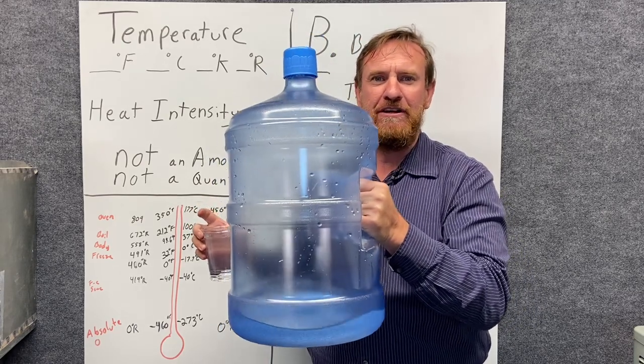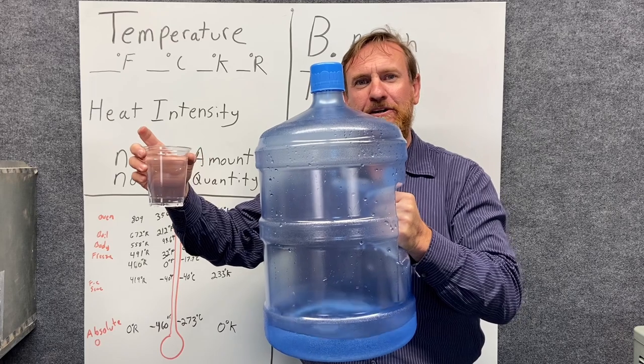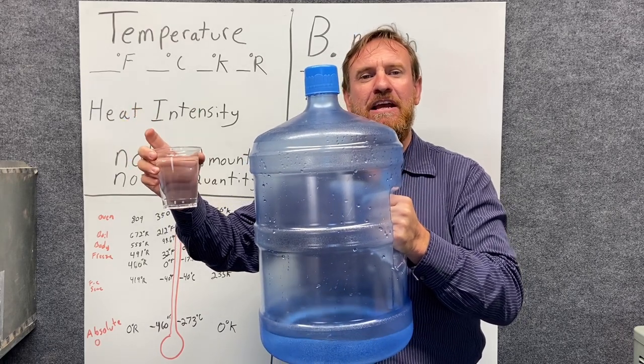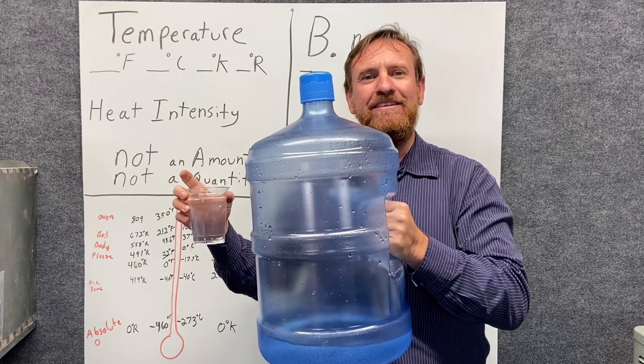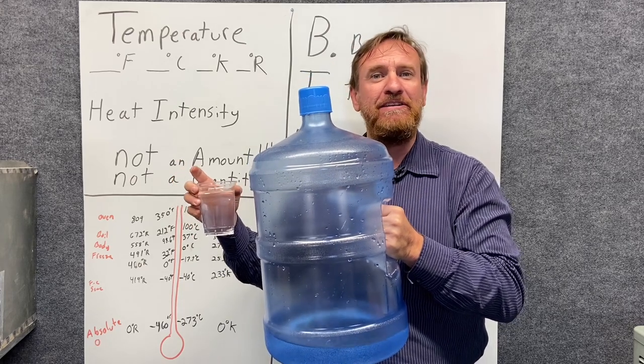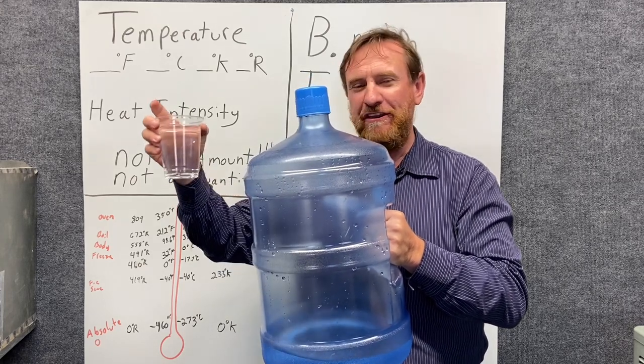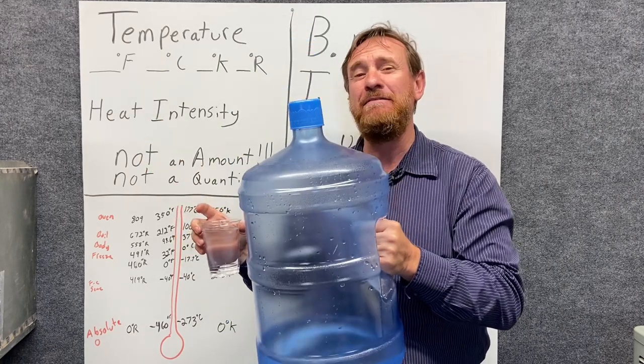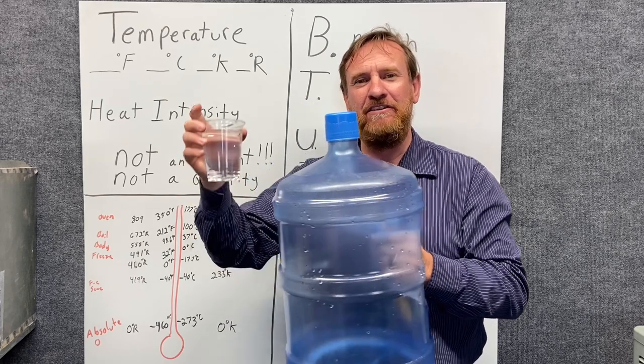Let's say that this is in a metal container and we put it on the stove, and on the same stove and another burner, same size burner, we put this cup in a metal container on the stove. Which would heat to the next temperature faster? If I wanted to raise it to 71 degrees, would this raise to 71 degrees first, or would this raise to 71 degrees first? Putting the same amount of heat into it.